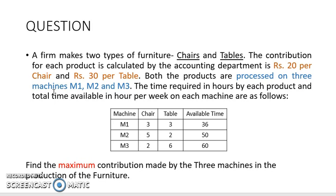Now the firm makes two types of furniture: chairs and tables. The contribution of each product is calculated by the accounting department, which is rupees 20 per chair and rupees 30 per table. Both products are processed on three machines M1, M2, and M3. The table shows how many hours are required for each product to manufacture and what is the total time available in hours per week for each machine. I need to find the maximum contribution made by the three machines in the production of the furniture.